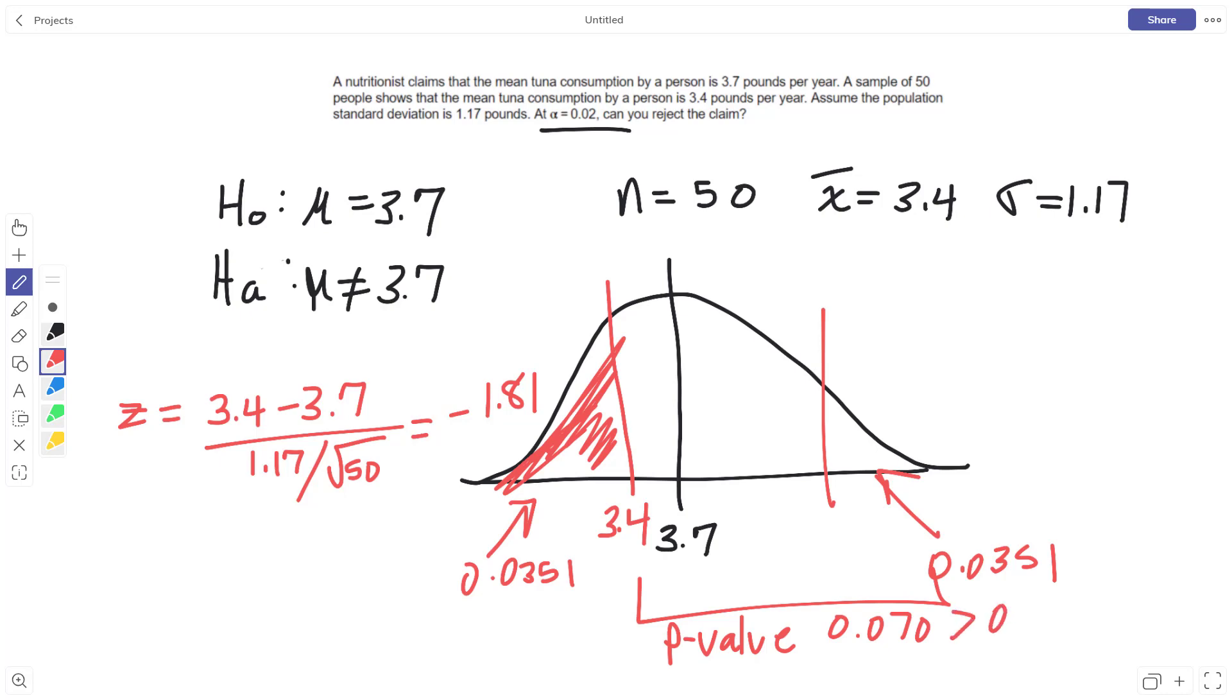Which is greater than my alpha, and so I will certainly fail to reject. Remember, the p-value is greater than my alpha, then I fail to reject the null. There is definitely not sufficient evidence to reject the claim that the mean consumption is equal to 3.7 pounds.